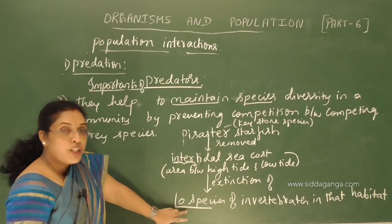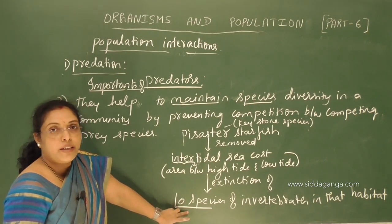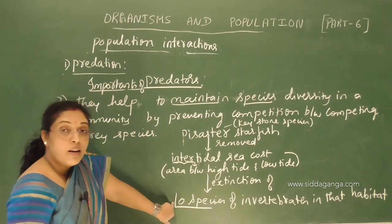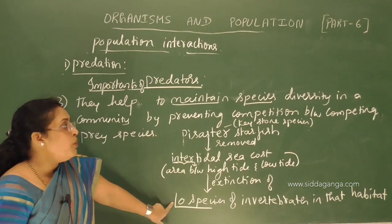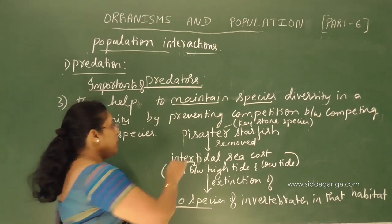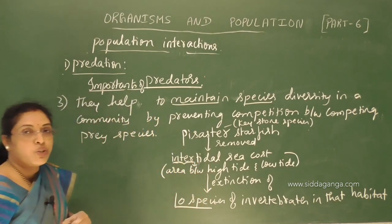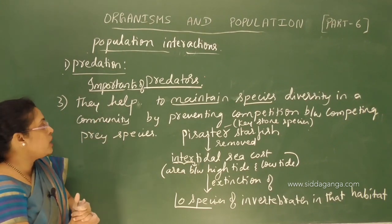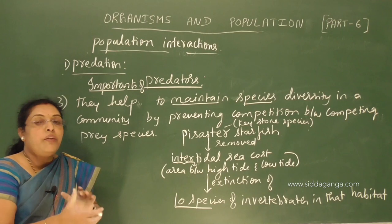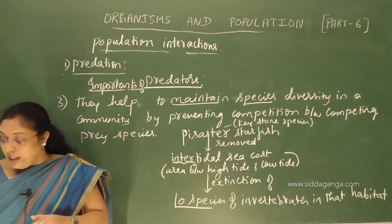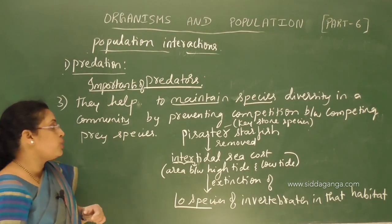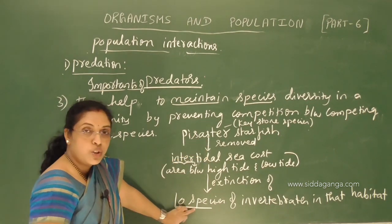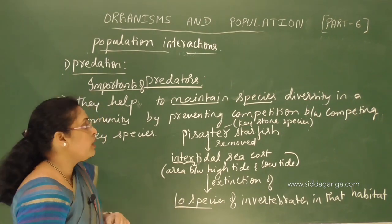The presence of Pisaster helped maintain species diversity among invertebrates in that habitat. When it was removed, extinction of 10 invertebrate species occurred due to competition between prey species. That is why Pisaster can be called a keystone species — it plays a very important role in maintaining species diversity in a community.